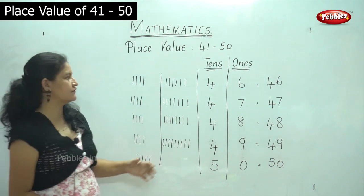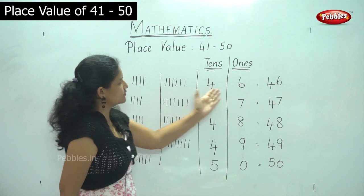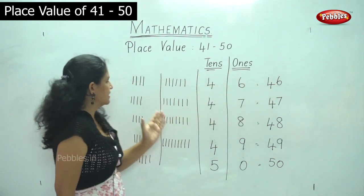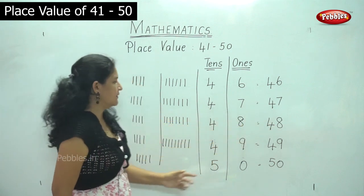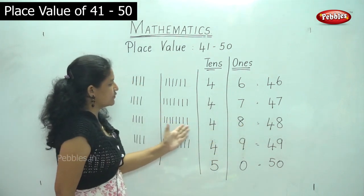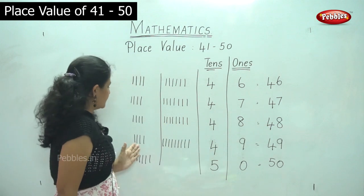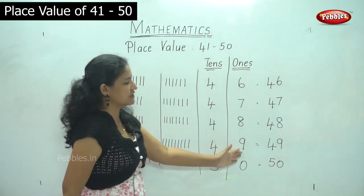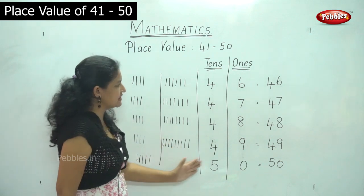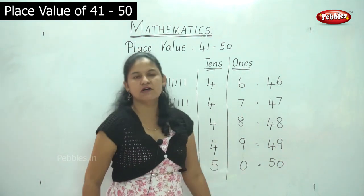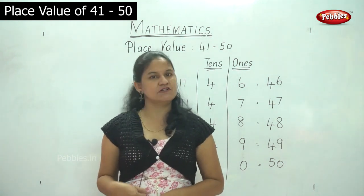So shall we see it again — numbers 46 to 50. So 4 tens and 6 ones is 46. 4 tens and 7 ones is 47. 4 tens and 8 ones is 48. 4 tens and 9 ones will give you 49. And 5 tens and 0 ones will give you number 50.